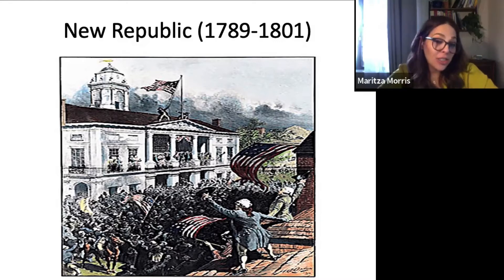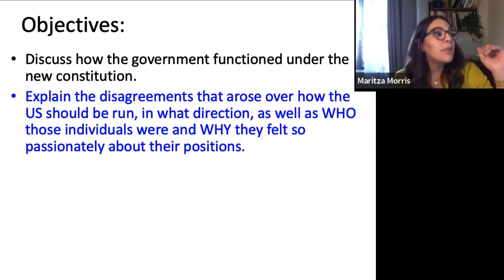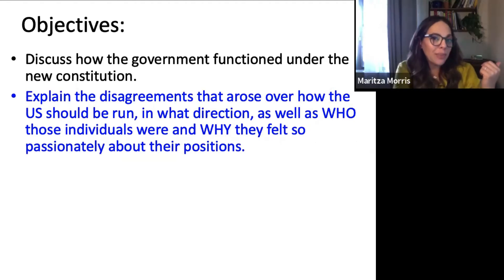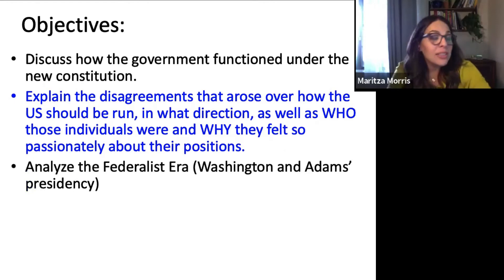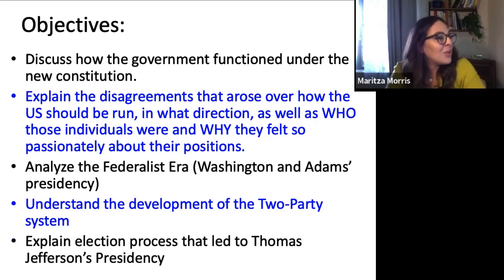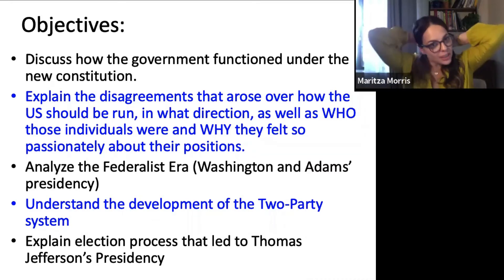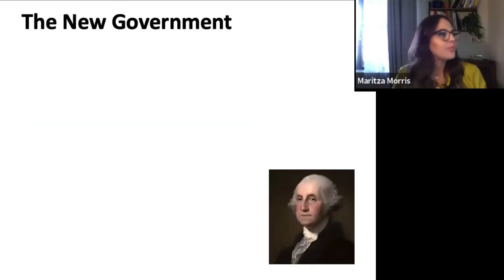Today we're going to discuss how the government functioned under the new U.S. Constitution. Then we'll explain the disagreements that arose over how the U.S. should be run and who those individuals were. We'll analyze the Federalist Era — Washington and Adams's presidencies — and understand the development of the two-party system. We'll also explain the election process that led to Thomas Jefferson's presidency — a very convoluted mess, a little quirk in the U.S. Constitution that made the election of 1800 such a mess.